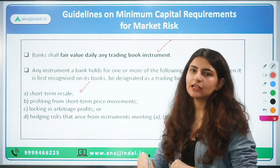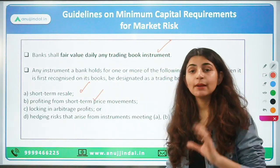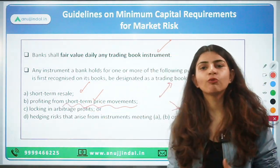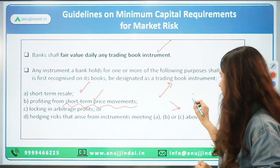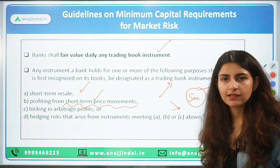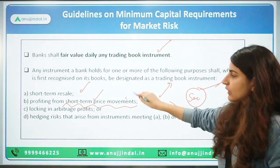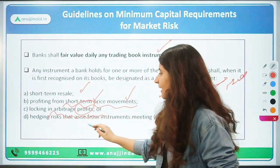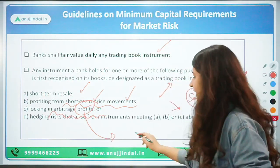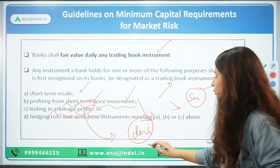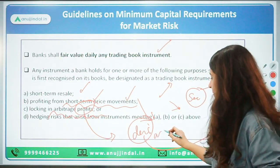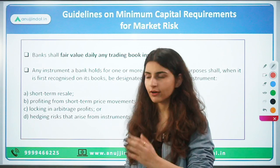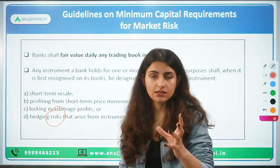Trading instruments are maintained for four purposes. First, short-term resale — you buy and within a short term you resell. Second, profit from short-term price movements — if securities go up you sell, and if prices go down you buy. Third, locking in arbitrage profit — earning profit by buying in one market and selling in another where the asset price has increased. Fourth, hedging risk — reducing risk by using derivative instruments such as futures or forward contracts.